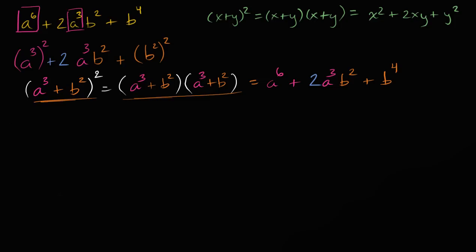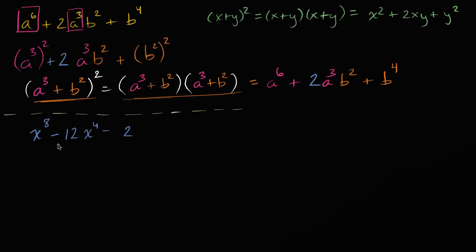Let's do another one. Let's say that we have an eighth degree polynomial: x to the eighth minus 12x to the fourth minus two. And we want to complete the square here. You're probably used to completing the square with second degree polynomials or quadratics, and now all of a sudden you have an eighth degree — but there's no reason you can't do that here.